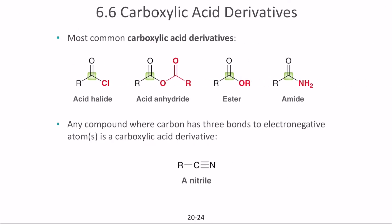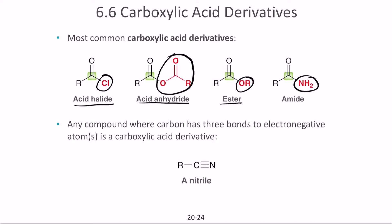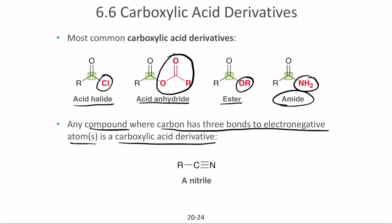For example, in place of OH if you have chlorine we call it an acid halide. If you have two carboxylate ions combining to form a compound, we call that an acid anhydride. If you have an alkyl or alkoxy group in place of OH we call that an ester, and if you have an amino group in place of OH we call that an amide. Any compound where the carbon has three bonds to electronegative atoms is a carboxylic acid derivative — chlorine, carboxylate, alkoxy, and amino ions are all electronegative atoms.